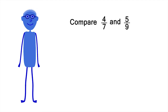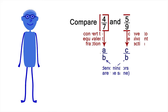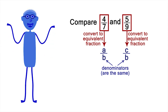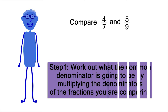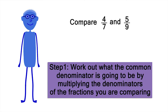If we don't have access to a fraction wall, then we have to find a different way of comparing 4 sevenths and 5 ninths. This can be done by converting each fraction to an equivalent fraction, each of which has a common denominator. I'll show you one way to do this. First, I'll work out what the common denominator is going to be by multiplying the denominators of the fractions we're comparing. 7 times 9 is 63.